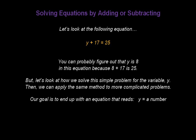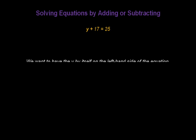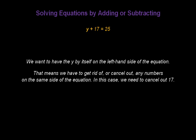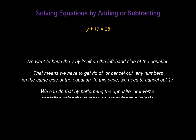Our goal is to end up with an equation that reads y equals a number. We want to have the y by itself on the left-hand side of the equation. That means we have to get rid of or cancel out any numbers on the same side. In this case, we only have one number and we need to cancel out 17. We can do that by performing the opposite or inverse operation using the number we're trying to eliminate.